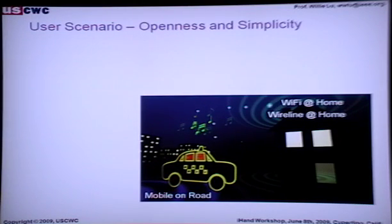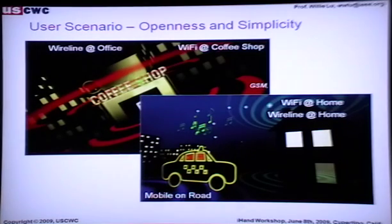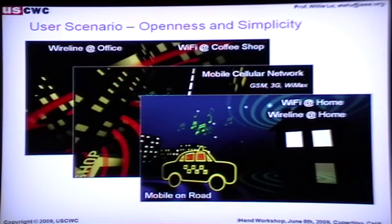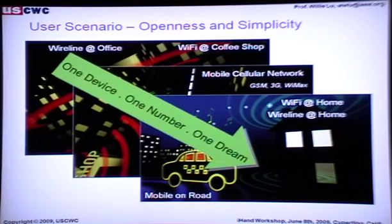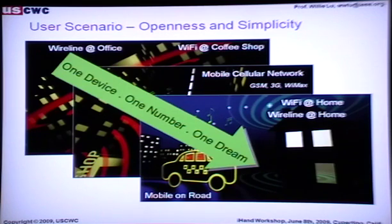From the user perspective, it's about openness and simplicity. At home and in the office you have Wi-Fi; on the street you have mobile GSM 3G networks. OWA brings them together: one device, one number, one dream. That's basically the 4G technology — the 4G smartphone technology for the future — including iPhone, iHandler, BlackBerry, Palm, Nokia, and Samsung. All the major vendors are going this way.